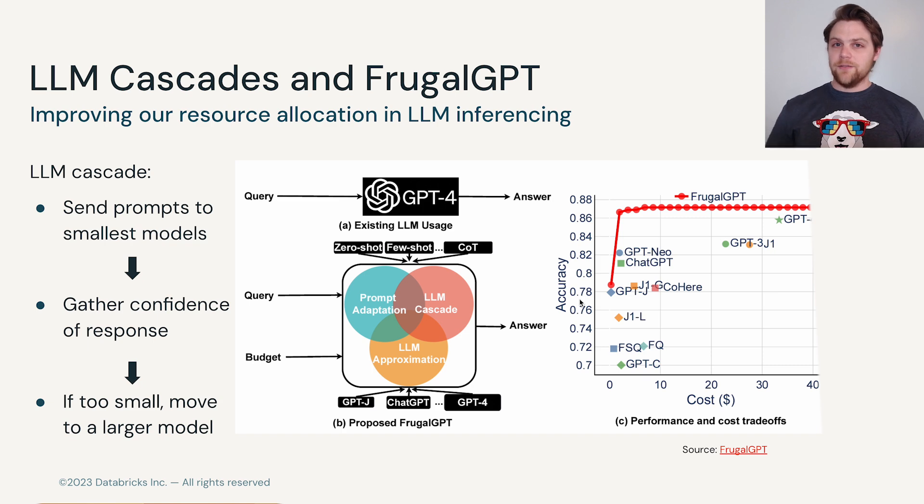This cascading effect of complexity and self-checking meant that FrugalGPT was able to maintain its accuracy far higher but use far less cost.